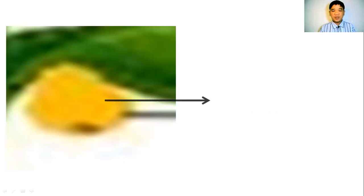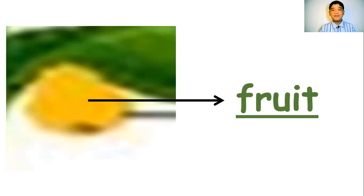The next part of the plant — what do you call this? We call it fruit. Everybody say fruit. And another one — what do we call this part of the plant? It can be a soft stem, a hard stem, or a woody stem. We call it stem.